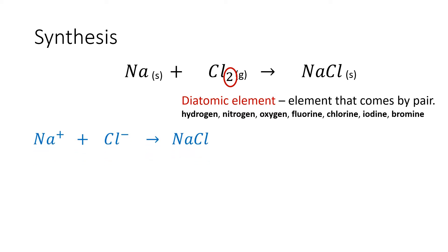Let's take a look at the ionic reaction between sodium and chlorine. Sodium has a charge of 1+, while chlorine has a charge of negative 1, so they form an ionic compound called sodium chloride. This tells us the possible product for the reaction between sodium and chlorine. Note that this chemical equation is not yet balanced.